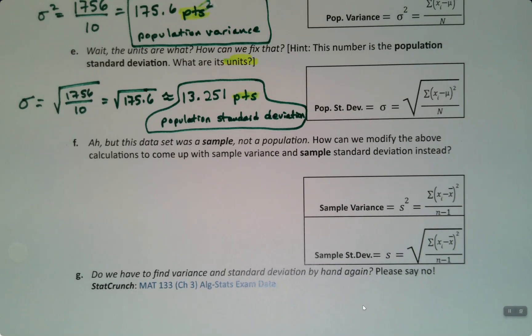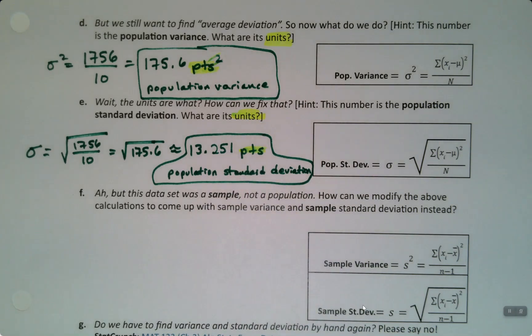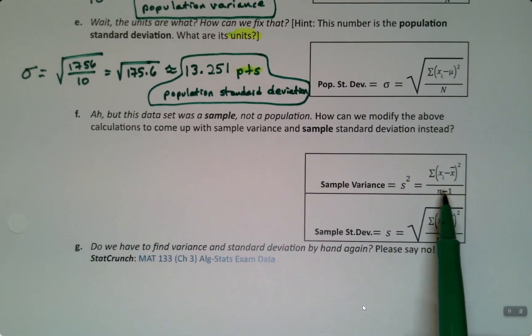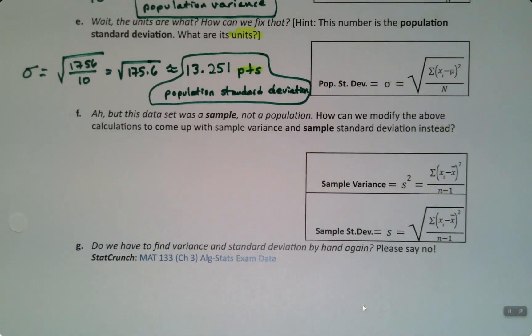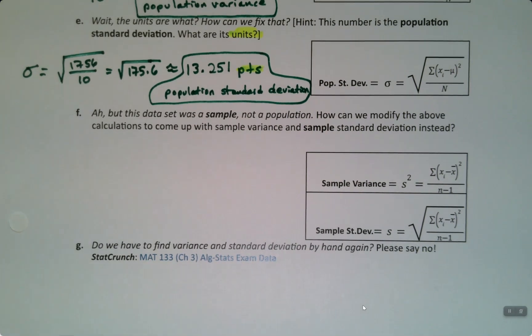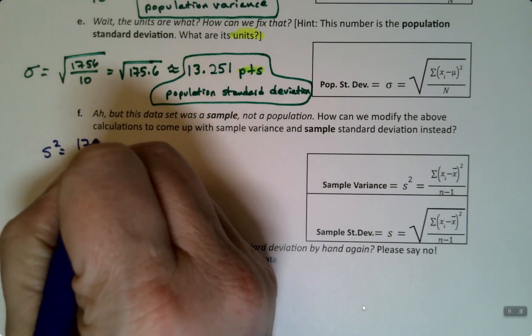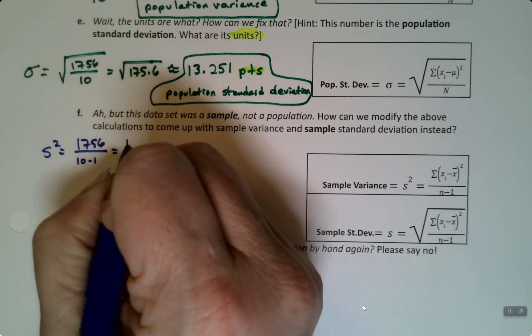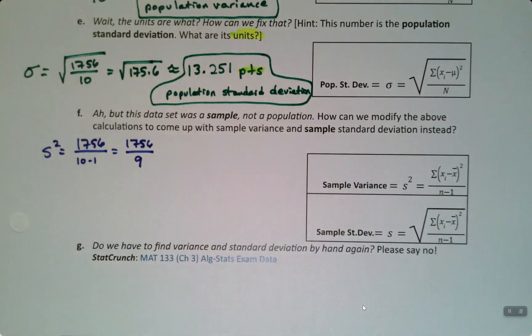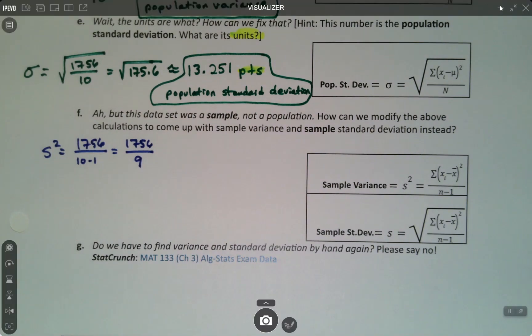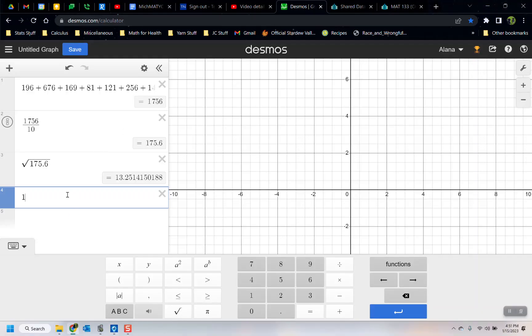But our dataset wasn't a population. These two values are what we use if your dataset's a population, and we didn't have a population. We had a sample. So how do we adjust for that? The answer is that instead of dividing by 10, we do 10 take away 1, in other words 9. So the variance would be s squared, which is 1756 divided by 10 take away 1, which is 1756 divided by 9. So I'm going to go grab Desmos and have Desmos tell me what that is.